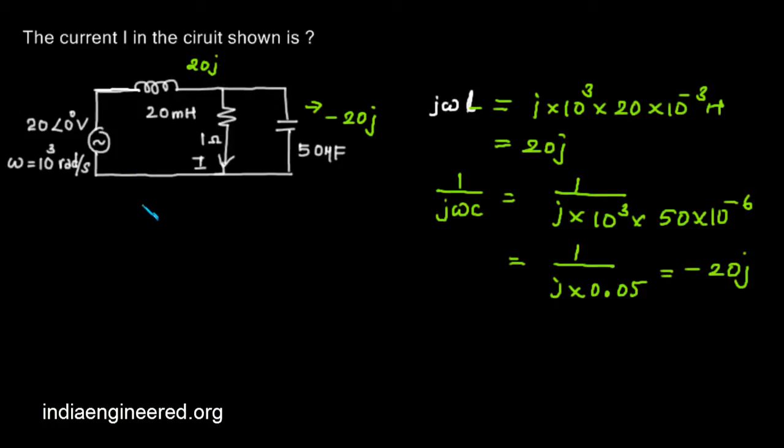Now we have to find out what is the current. For that we will first find out the voltage here, and then find out what is the current through 1 ohm. We can use voltage divider rule like in DC circuits.